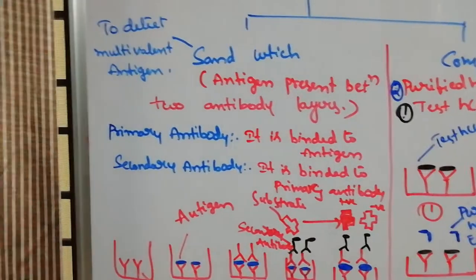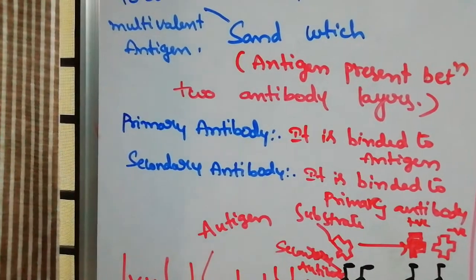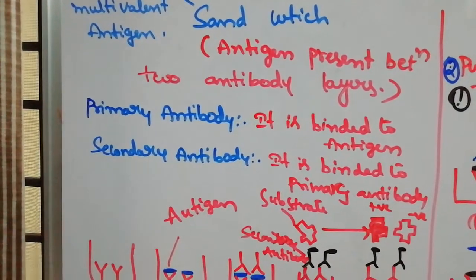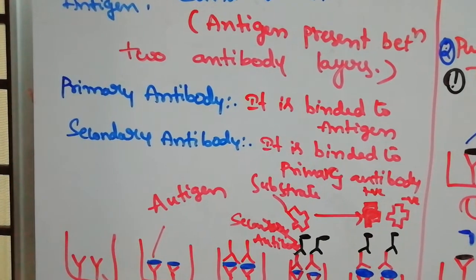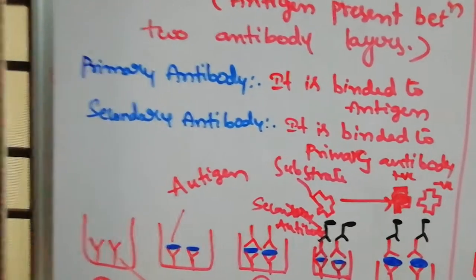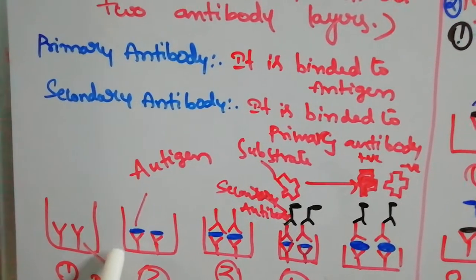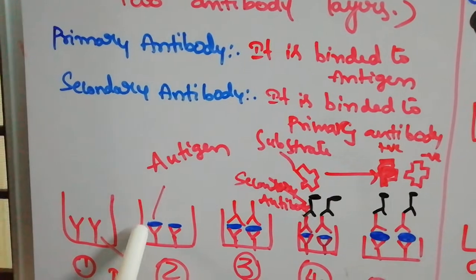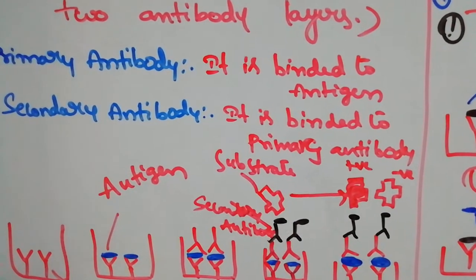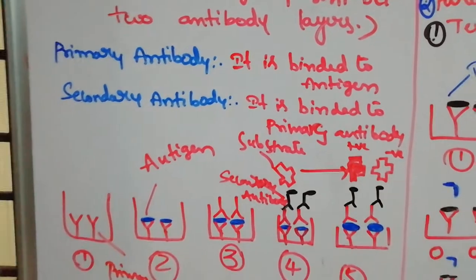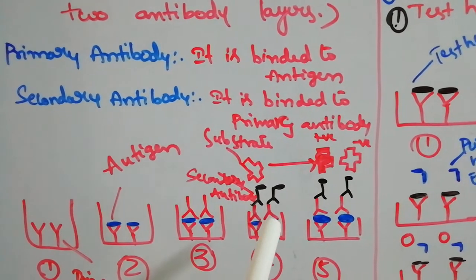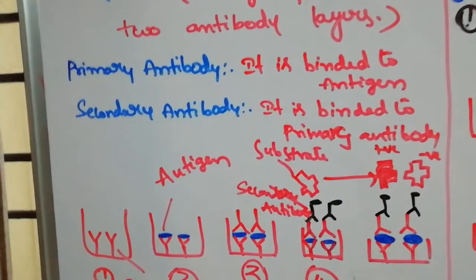In sandwich type, they are generally used to detect multivalent antigen, or to check whether the antigen is bound to the antibody correctly. The antigen is present between two antibody layers — that is why we call it sandwich type. Primary antibody means the antibody which is bound to the antigen. Secondary antibody means the antibody which is bound to the primary antibody.